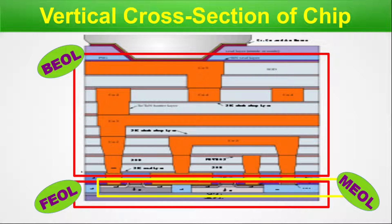The rest of the interconnect — whatever we do in the PNR level in the SOC design, specifically in the physical design process — all those interconnects, that is the metal and via layers, are fabricated through the BEOL process. This explains the three processes: FEOL, MEOL, and BEOL.